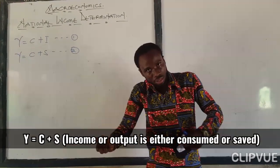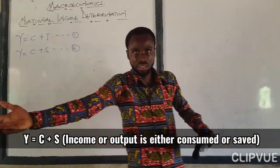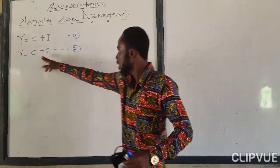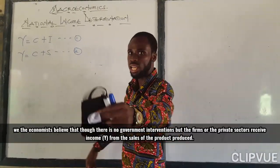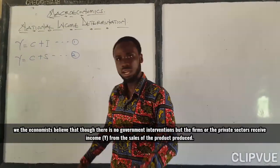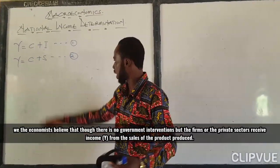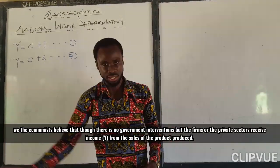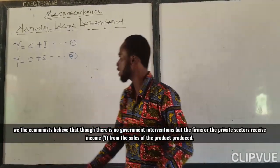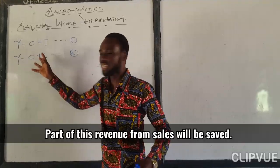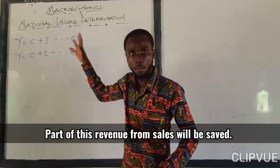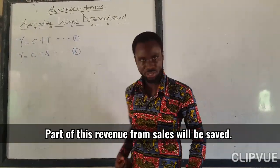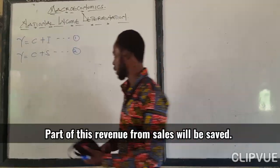So it's either you consumed or you saved. It's either they consume it or they sell it to their buyers, their customers, and they get money. The money they get, they invest it. So these are the two models that we can deduce from the two-sector economy.